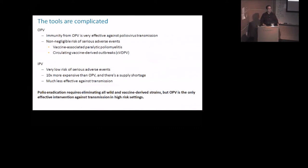Given that IPV, the other vaccine, Jonas Salk's famous vaccine, has essentially no risk of serious adverse events, best estimates are of order 1 in 20 million. But it's more expensive, which matters in a donor-driven public health effort. There's also currently a serious supply shortage, so global demand cannot be met by current global manufacturing capacity. But more importantly, it's also much less effective against transmission.